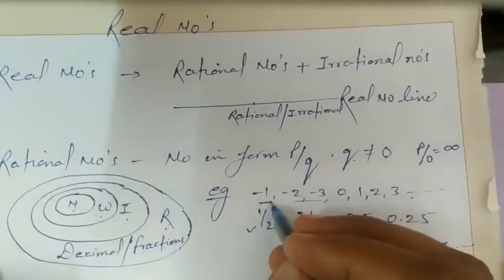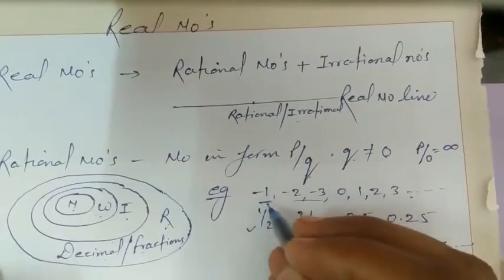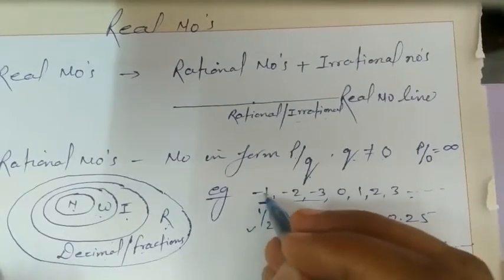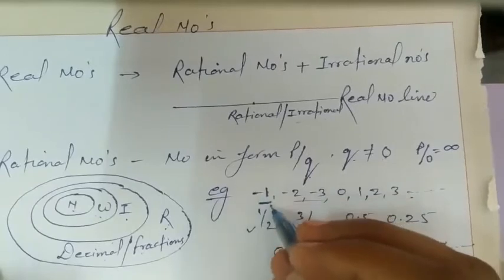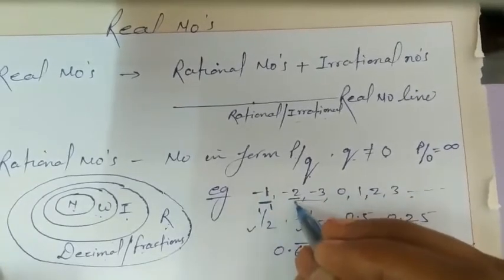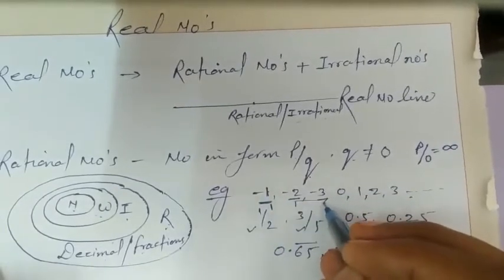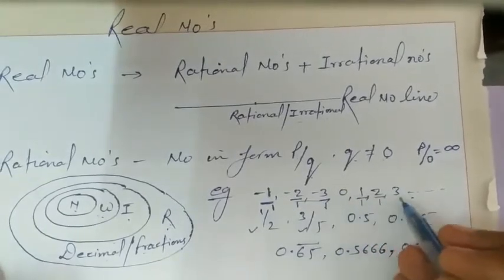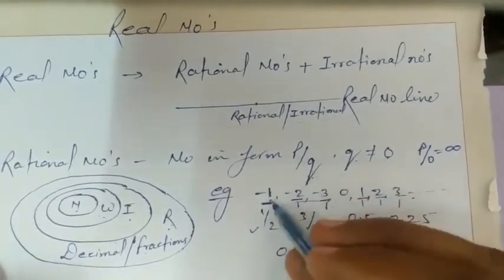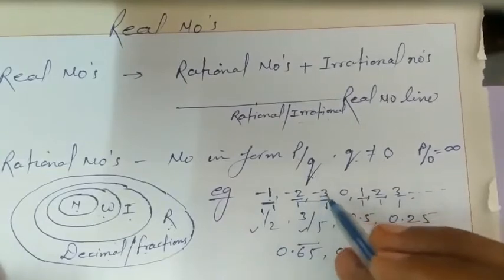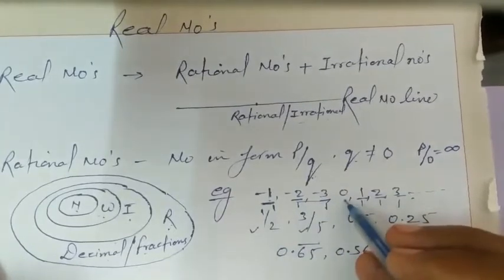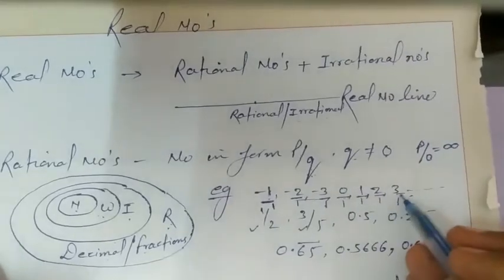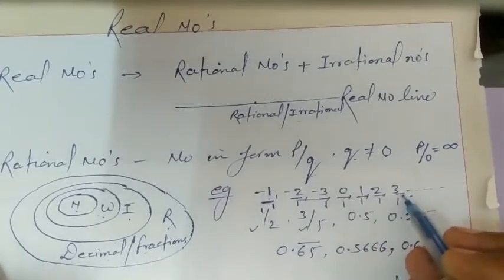This integer minus 1 will also be a rational number. Why? Because we can express minus 1 as minus 1 upon 1, minus 2 as minus 2 upon 1, minus 3 as minus 3 upon 1. So all these numbers come in the form of P upon Q. These integers will also be rational, and 0 is also rational because 0 can be written as 0 upon 1. Natural numbers 1, 2, 3 will also be rational numbers.